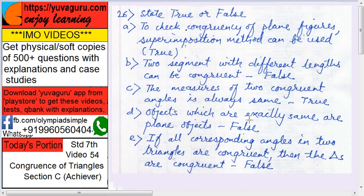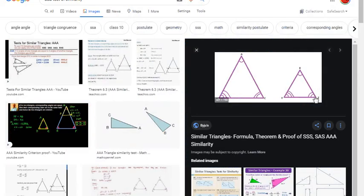If all the corresponding angles in two triangles are congruent, then the triangles are congruent. False. See, these two angles ABC and XYZ, all the angles are congruent, but are the triangles congruent? No, they are similar. This is a test for similarity.